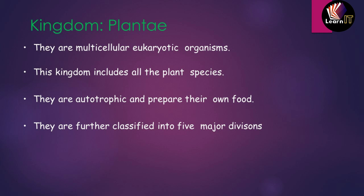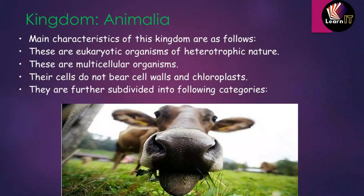The next kingdom, which includes humans, is kingdom Animalia. As the name suggests, all animals in this world come under this category. The main characteristic is that they are eukaryotic organisms of heterotrophic nature, meaning they cannot prepare their own food and must depend on other organisms or plants for nutrition.